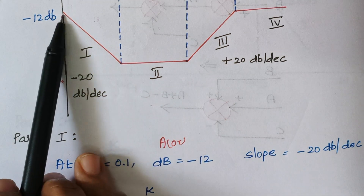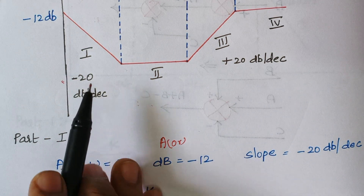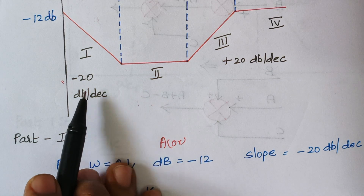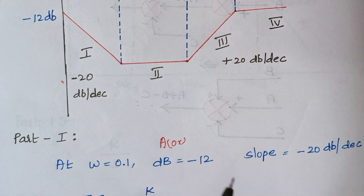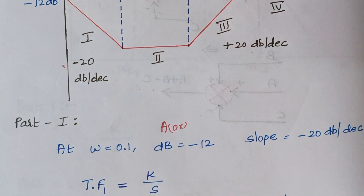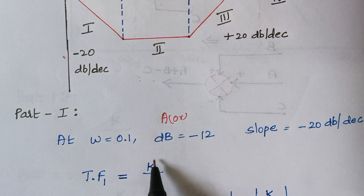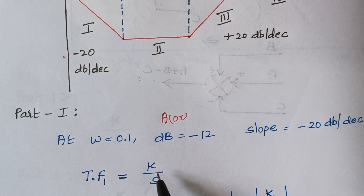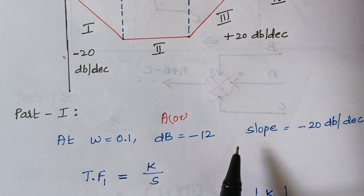Since we are having a negative slope, what does it indicate? It indicates we are having an S term in the denominator. So the transfer function is written as K divided by S, where K is a constant whose value we don't know yet.